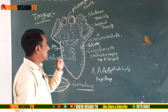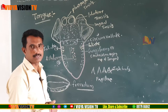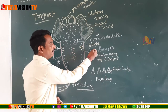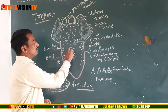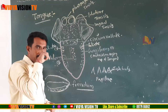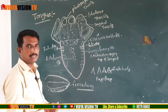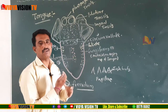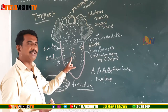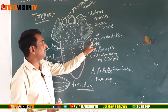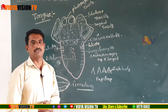On the surface of the tongue, totally four types of papillae are present: first is fungiform papillae, second is filiform papillae, third is circumvallate papillae, and fourth is foliate papillae.